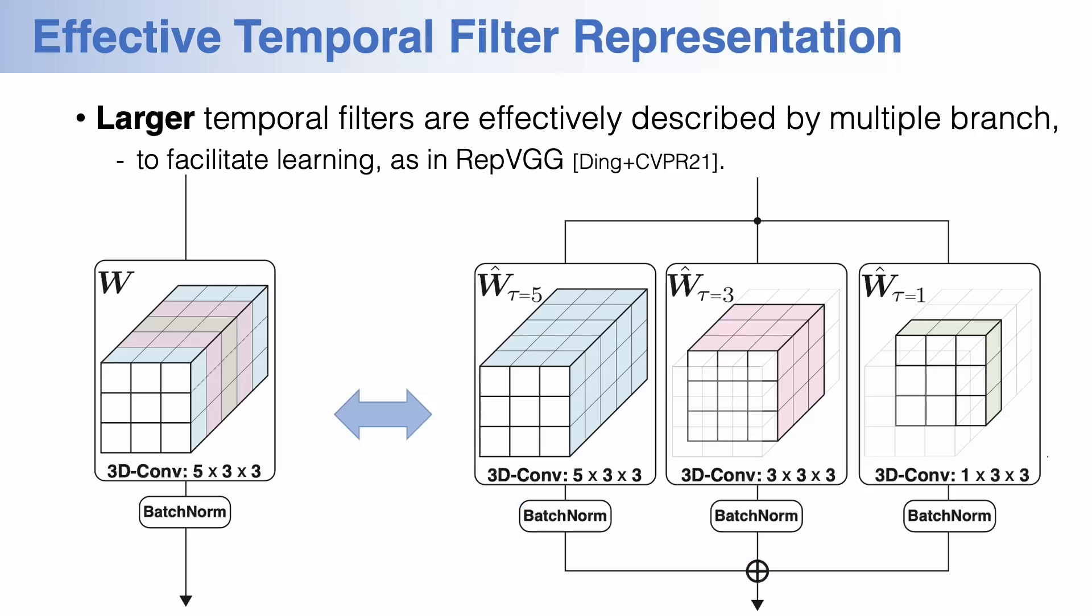The enlarged temporal filters increase the number of parameters, which may impede training. Toward effective training, we apply multi-branch representation to the larger temporal filters so that the gradient information is effectively backpropagated through the multiple paths. Note that these branches are linearly merged into a single filter to keep the computation cost.